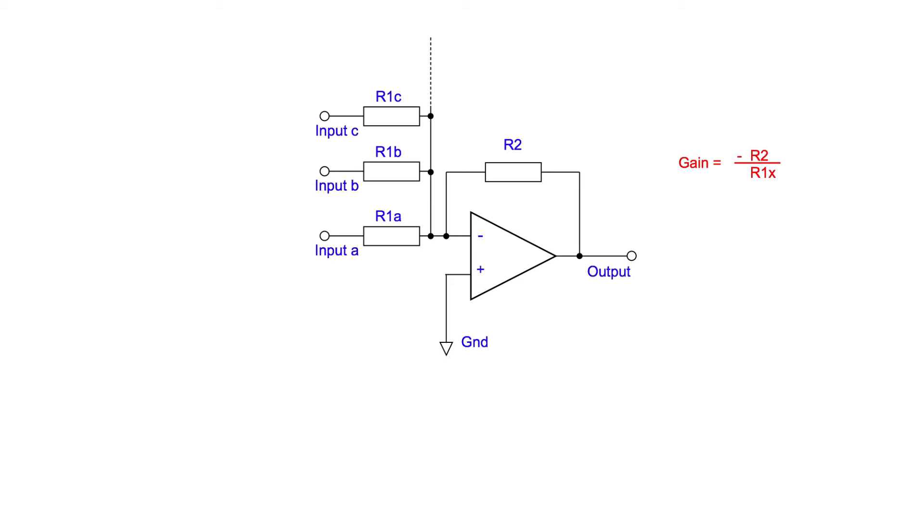Let's take an example for input A. We can choose R2 to be 10k ohms, as this is a nice convenient value. If we want the gain to be minus 10, then we can put the values into the gain formula. With a little manipulation we can see that R1a is equal to minus 10k upon minus 10, and this comes out to be a kilohm.